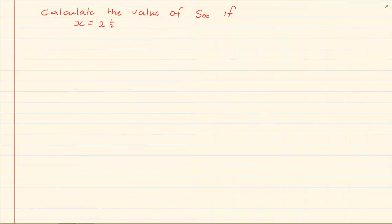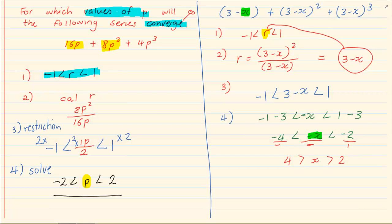The follow-up question would say calculate the value of sum of infinity if x is equal to 2 and a half. In order for the sum to work, we need to see that the conditions are fulfilled. Now it says that x must be greater than 2 but smaller than 4.